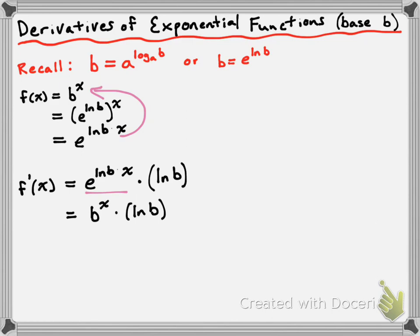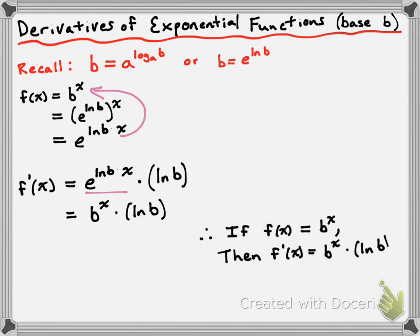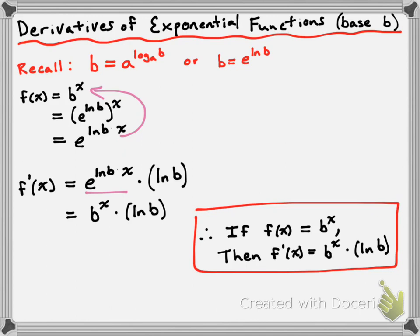So let's conclude by writing our final derivative rule. Therefore, if f of x is equal to b to the power of x, then f prime of x is equal to b to the power of x times the ln of b. So there's our derivative rule if we want to take the derivative of an exponential function base b. Let's use it to do a couple of examples.